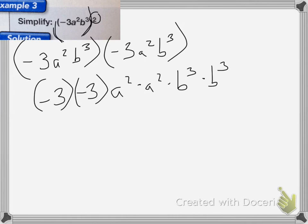Then I'm going to group those like terms. So negative 3 times negative 3 is a positive 9, a squared times a squared is going to be a to the fourth power, and then b cubed times b cubed is going to be b to the sixth power.